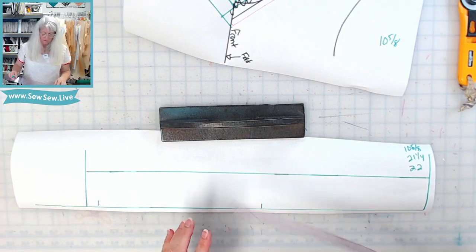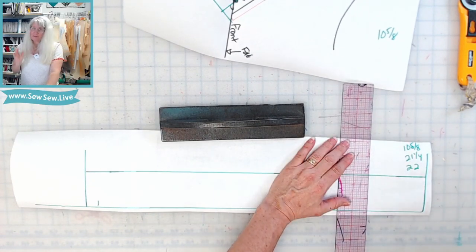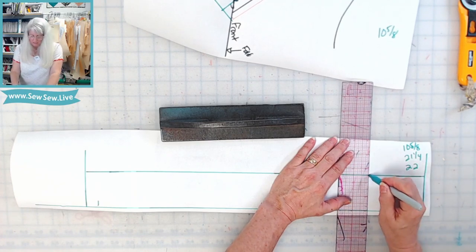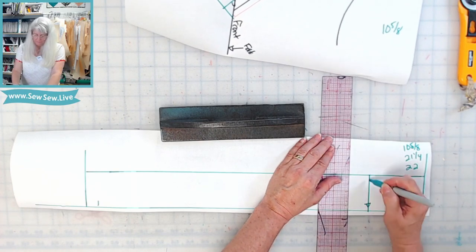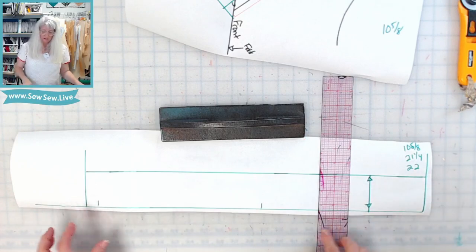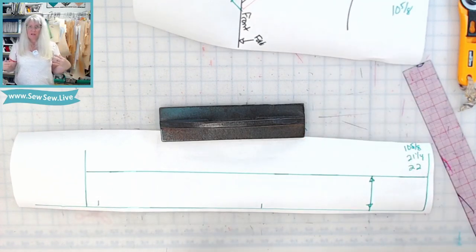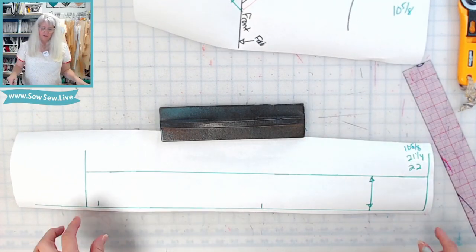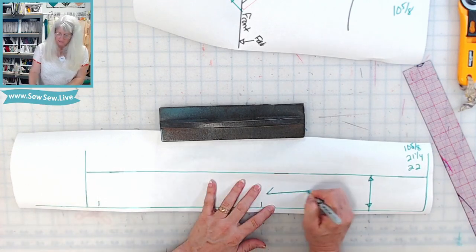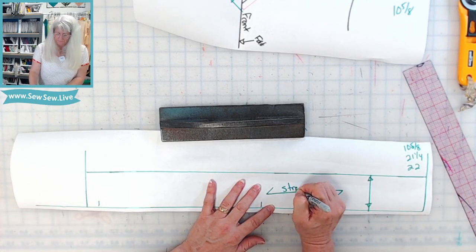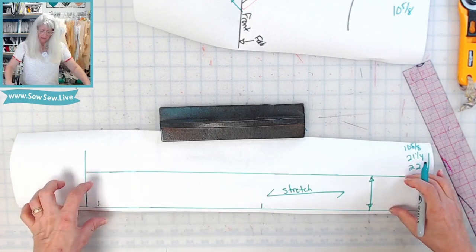Now for your grainline, you're going to do this most likely. You're going to be doing it perpendicular to the long edges here. So the rule for me is I do my neckband on the greatest stretch. So if this is the stretch, that's how I cut my neckband.